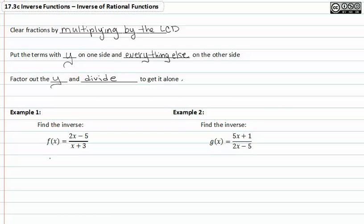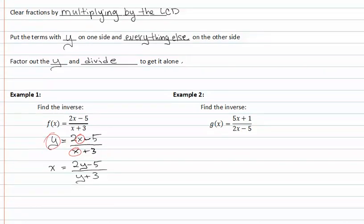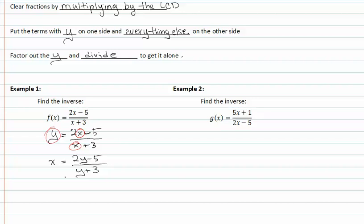First, let's substitute f with y. y is equal to 2x minus 5 over x plus 3. Now we swap the x's and y's. This gives us x is equal to 2y minus 5 over y plus 3. Now that we've swapped, we need to solve for y.